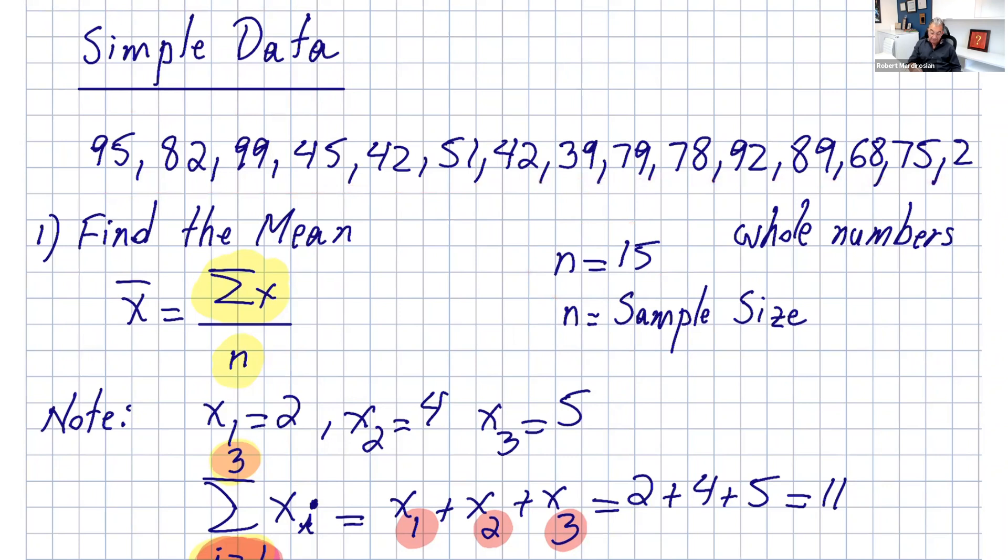The first thing you want to find is the mean. Whenever you have test scores, you're very interested to find the mean or average because you want to know how you did comparing to the class. For example, if your test score is 30 and the mean is 15, you did pretty well. If your test score is 30 and the average is 80, you did not do very well.